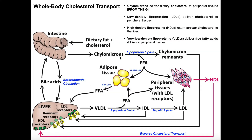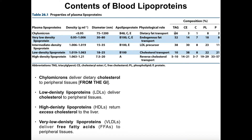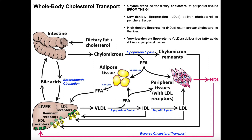Whenever chylomicrons encounter a cell or tissue that requires free fatty acids, the cell activates a protein called lipoprotein lipase. Lipoprotein lipase is part of the chylomicron but only becomes activated when it encounters a cell that needs free fatty acids. Being a lipase, this enzyme hydrolyzes free fatty acids from the triglycerides present in the chylomicron. So if a chylomicron comes in contact with a skeletal muscle cell that wants free fatty acids, the cell activates this enzyme, it hydrolyzes free fatty acids off the triglyceride, and those free fatty acids can then reach that cell for energy. In the case of adipose tissue, those free fatty acids are stored — a process called lipogenesis.